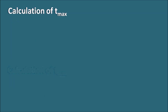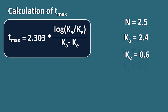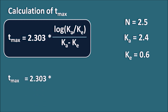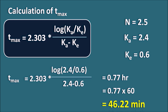Calculating T-max: T-max equals 2.303 times log(Ka/Ke) divided by (Ka minus Ke), substituting Ka equals 2.4 and Ke equals 0.6 gives T-max equals 2.303 times log(2.4/0.6) divided by (2.4 minus 0.6). Solving this gives T-max equals 0.77 hours, or equivalently 46.22 minutes. The maximum plasma concentration is achieved after 0.77 hours. T-max is always expressed in hours.